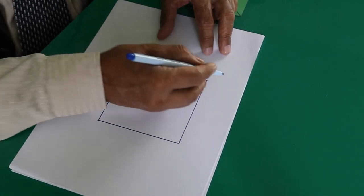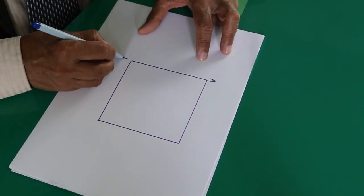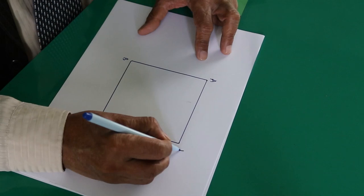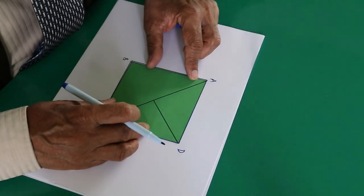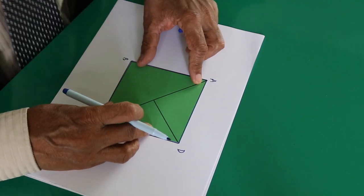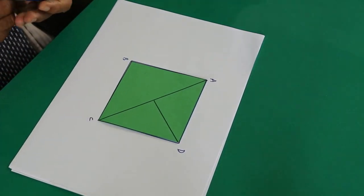Now you can name this square as A, B, C, D and put the previous square on top of it. It fits exactly; they are congruent to each other.